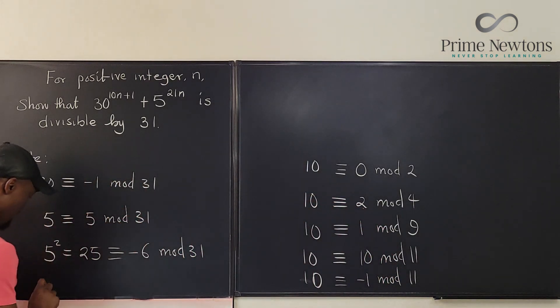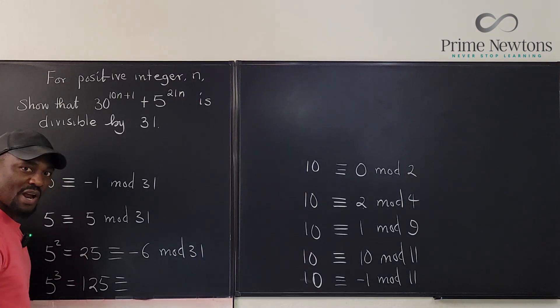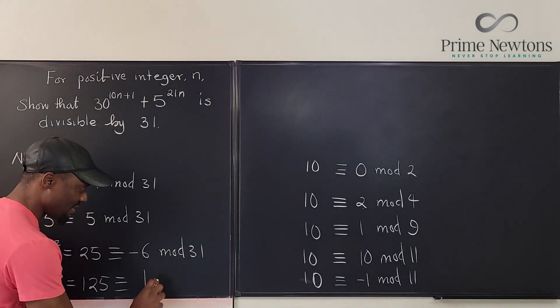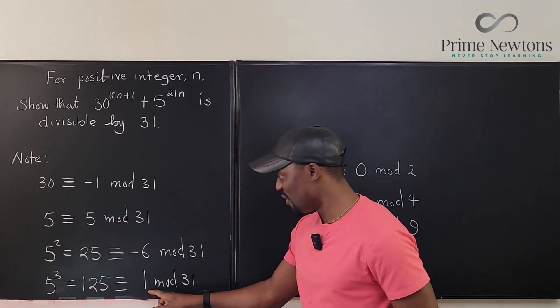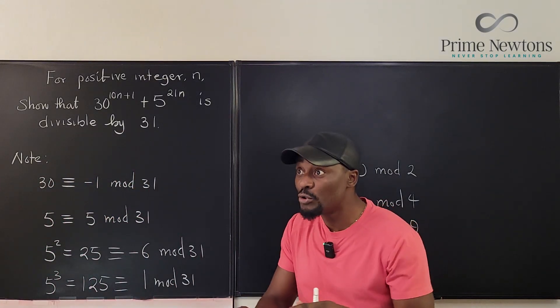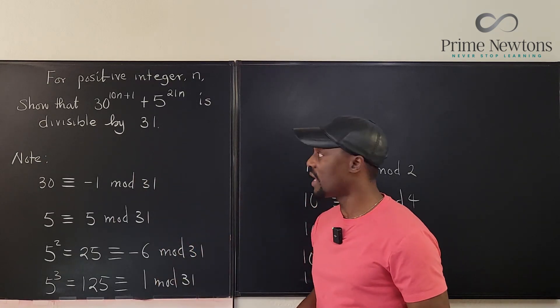So let's try 5 cubed. 5 cubed is 125. If you divide 125 by 31, surprisingly, you get one mod 31. So this is the kind of number you're looking for and you expect it to try them out until you find a small number before you begin your calculation.